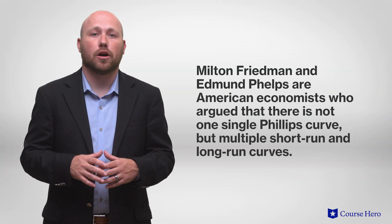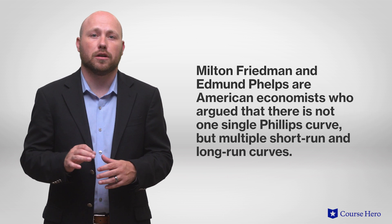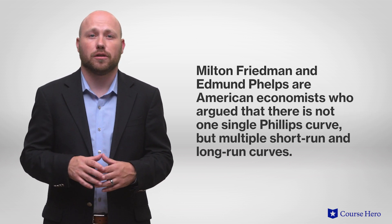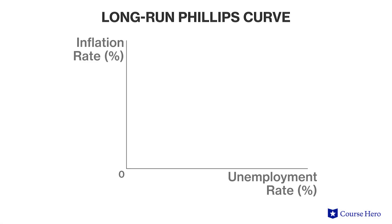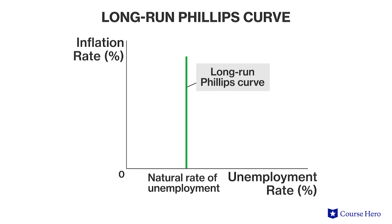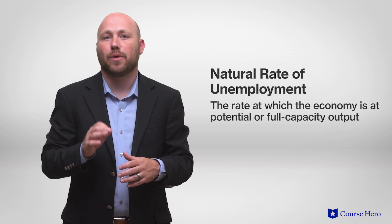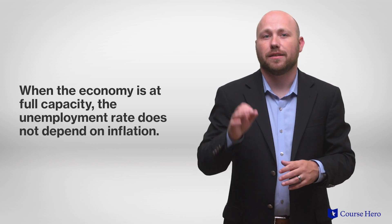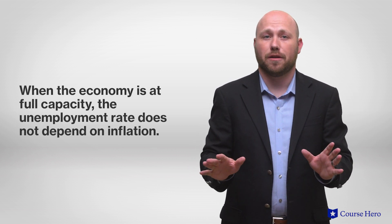American economists Milton Friedman and Edmund Phelps argued that there is not one single Phillips curve, but a series of short-run Phillips curves and a long-run Phillips curve, which exists at the natural rate of unemployment. In the long run, the Phillips curve is vertical or completely inelastic at the natural rate of unemployment — the rate at which the economy is at potential or full capacity output. When the economy is at full capacity, the unemployment rate does not depend on inflation.